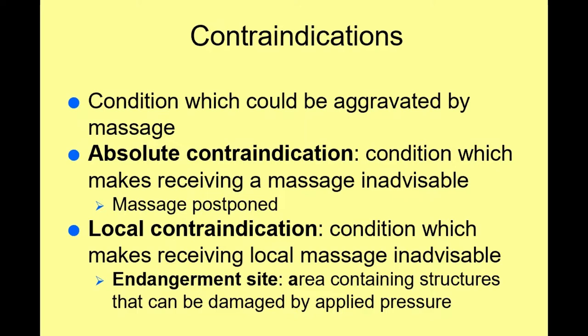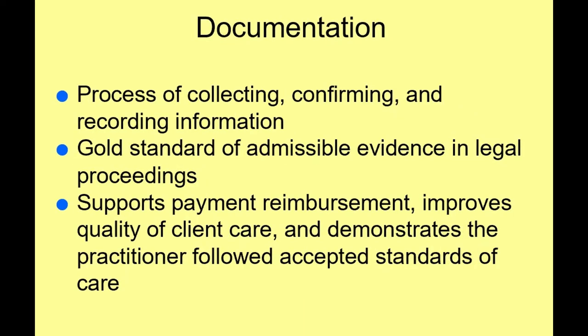A local contraindication is a condition where local massage is inadvisable, like a boil or a rash. An endangerment site is an area containing structures that can be damaged by applied pressure — like the throat, the back of the knee, deep in the armpit, or the temple. You are not going to do deep tissue work in these areas.